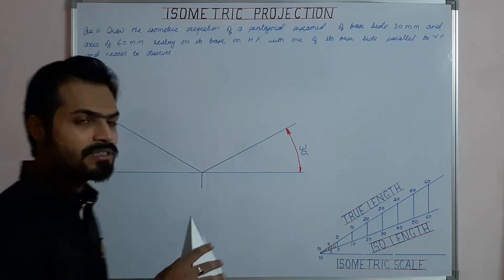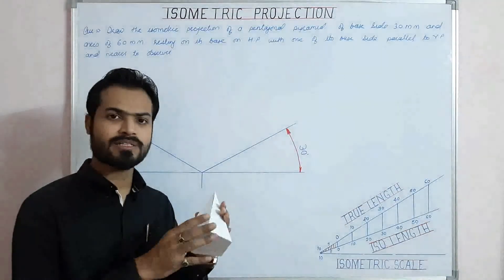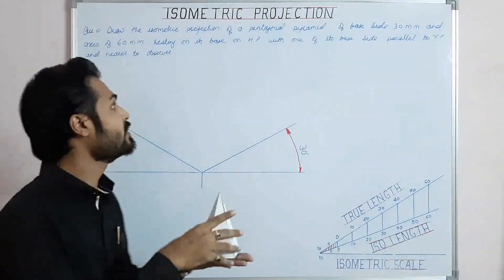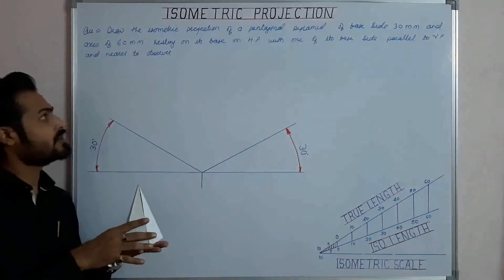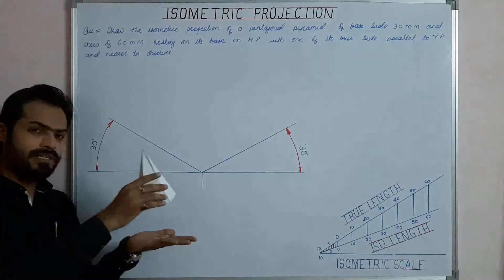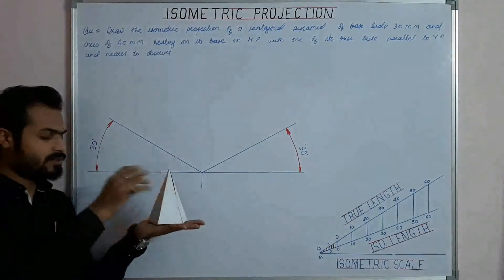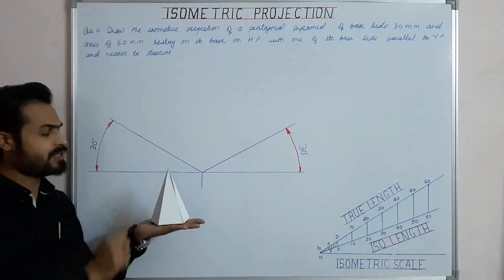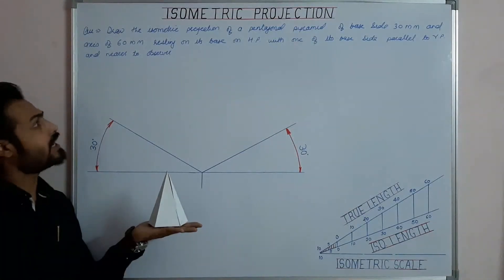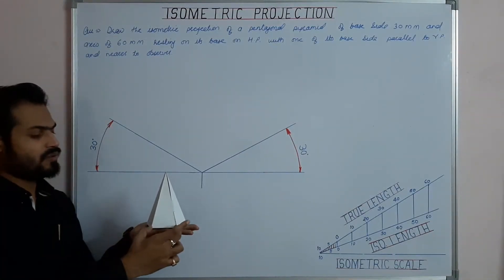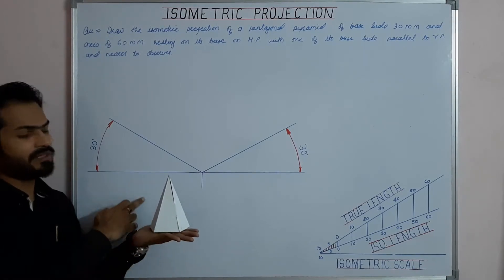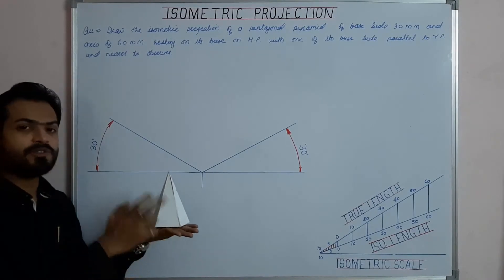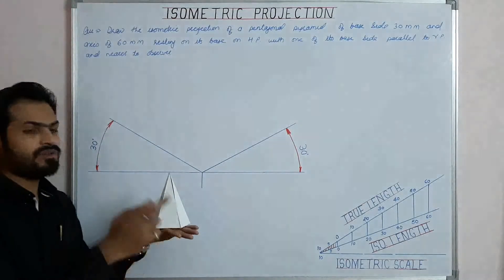It is a pentagonal pyramid — it has a pentagonal base and 5 identical triangular faces. Coming to the constraints: the solid is resting on its base on HP, meaning the pentagonal base is contained by HP, with one of its base sides parallel to VP. So the side which is parallel to VP is also nearer to the observer.